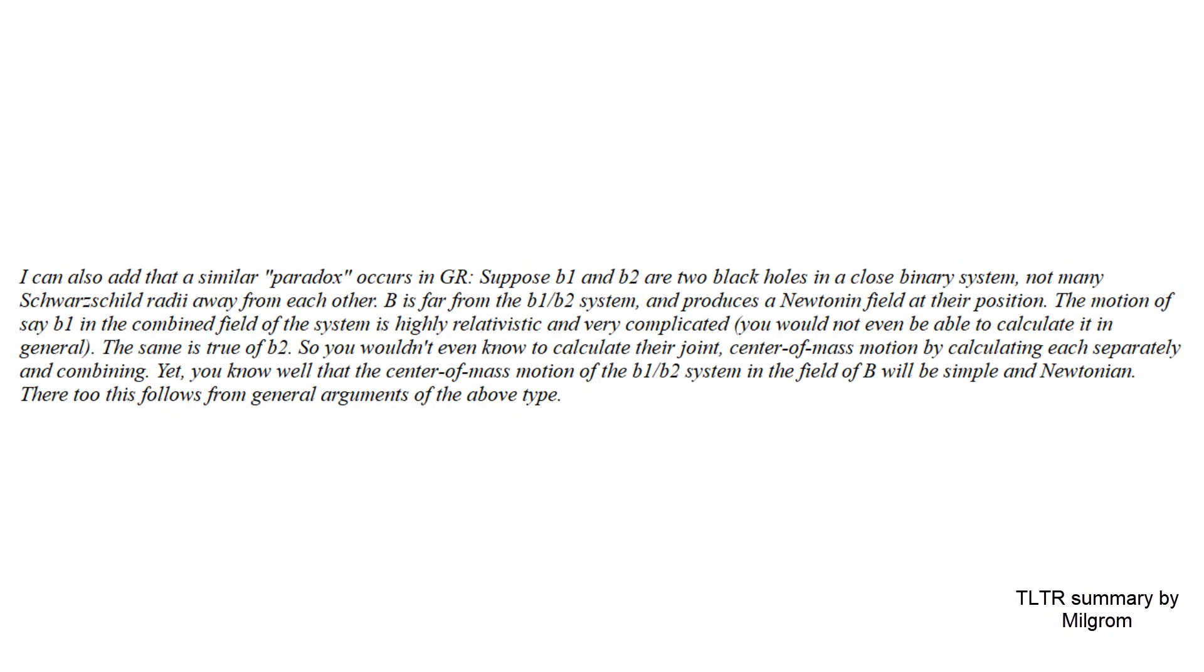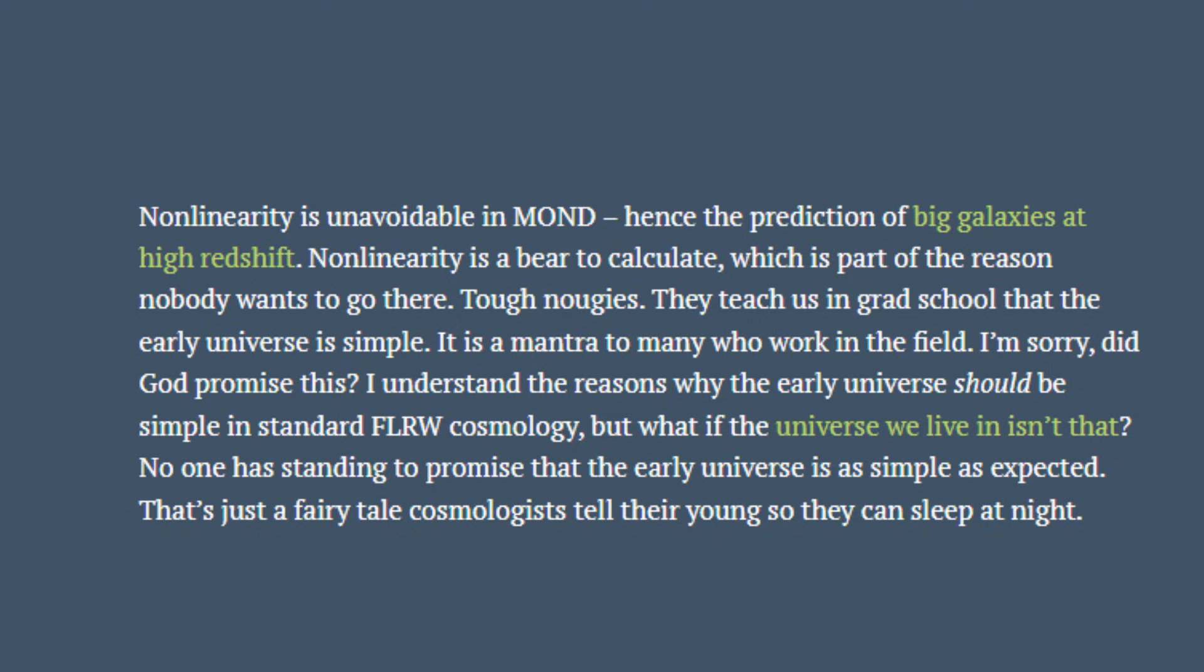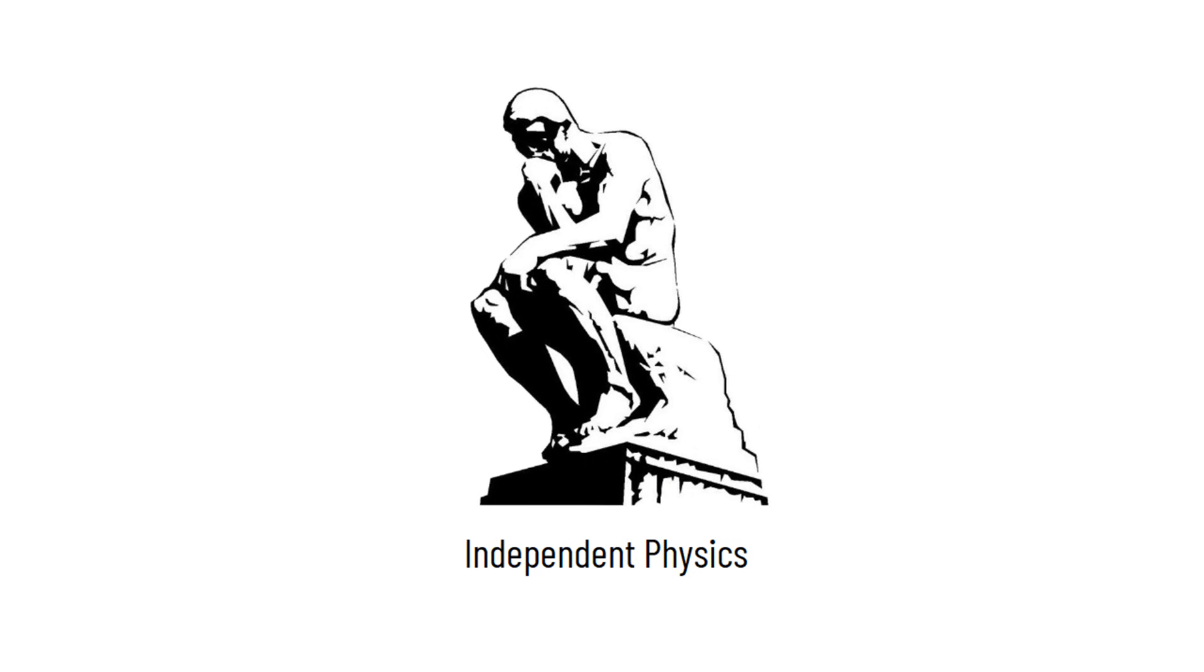An analogous case happens in general relativity, where a system can be highly relativistic, such as the merging of two black holes, but moves Newtonianly sufficiently far away from a larger mass such as a galaxy. The nonlinearity of MOND makes it difficult to find the fundamental theory from which it emerges as an approximation, and perhaps hints that one should work directly with a relativistic theory to find it. Thank you very much, and see you next time here in Independent Physics.